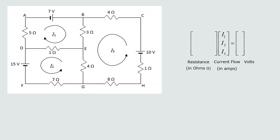We break it down by loop, starting with loop 1. The current flow in loop 1 is going clockwise. When I1 goes through this loop, it passes through three resistors: the 3-ohm resistor, the 1-ohm resistor, and the 5-ohm resistor. So the resistance for I1 is 3 + 1 + 5, giving the term (3+1+5)I1.